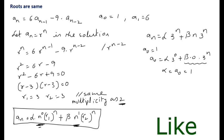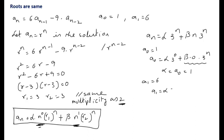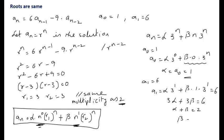The second term becomes 0, giving α = a₀ = 1, so α = 1. Using the second initial condition a₁ = 6: a₁ = α·3¹ + β·1·3¹ = 6, which gives 3α + 3β = 6, so α + β = 2.